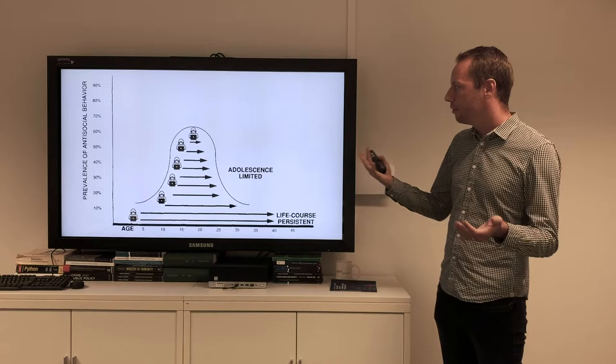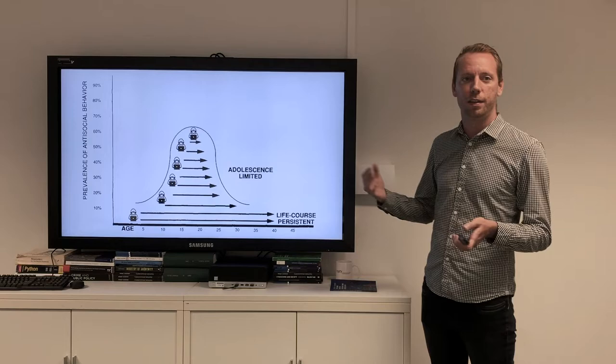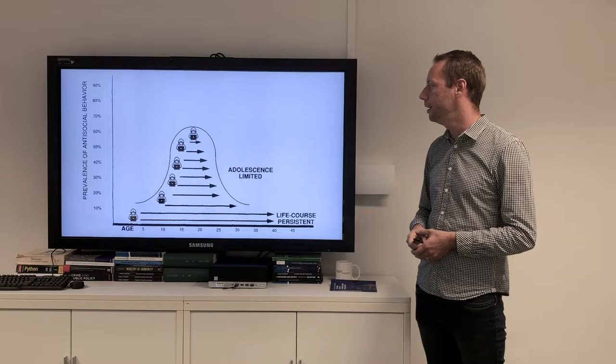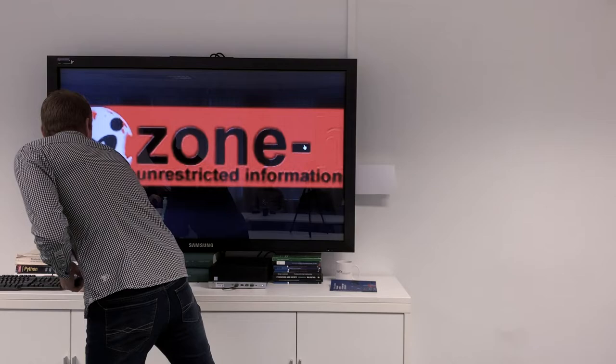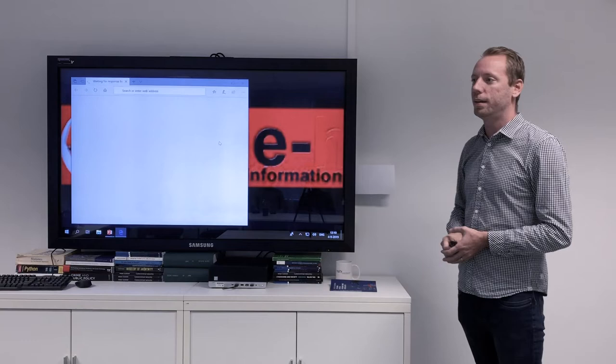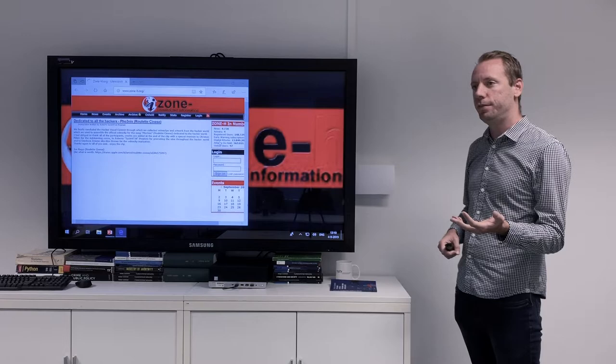From the criminal career and life-course study from Jan Blokland, you see a high-chronic group that keeps offending over the life course and an adolescent-limited group who only offend during their teenage years. The question is, will we find the same patterns if we look at cybercriminals? This, as far as we know, has not been done before. That will be the topic of our study.